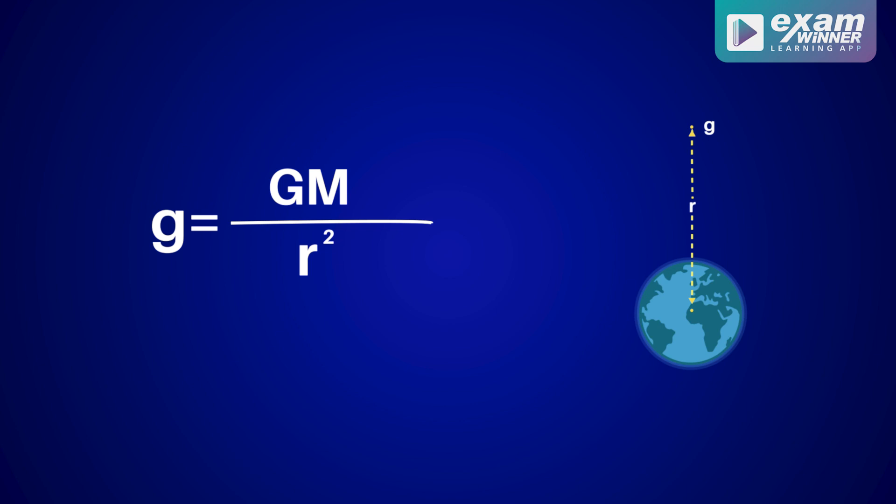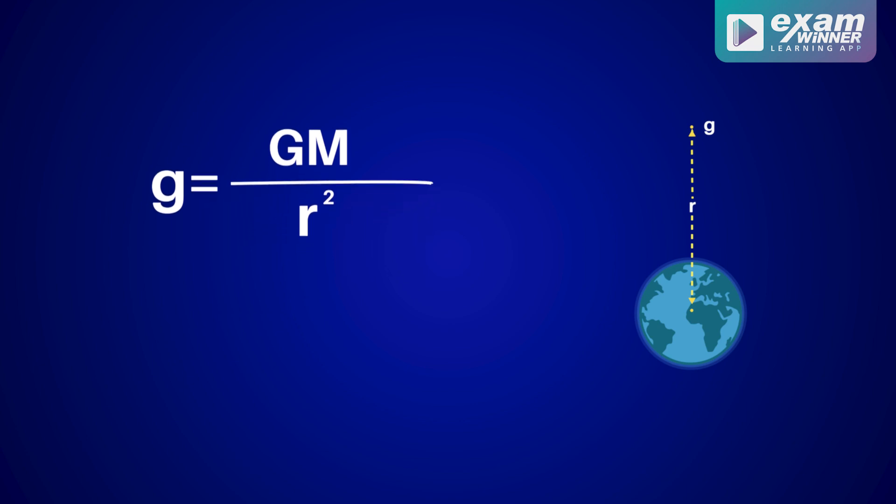If we move on to infinity, g becomes zero. If we want the acceleration due to gravity to be zero, we have to move on to infinity. That is why we have to send the ball to infinity.